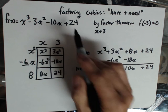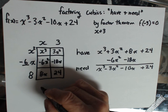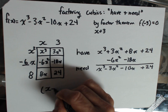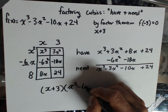And so factoring this down into a binomial and a quadratic, basically I can say this is x plus 3 times x squared minus 6x plus 8.